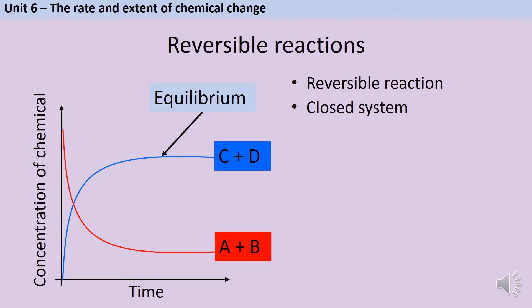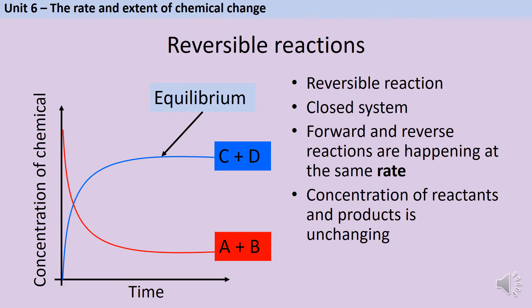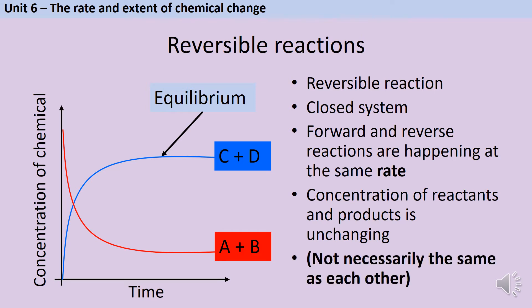When we think about equilibrium in chemistry, we're looking for the point where the forward reaction — where A and B turn into C and D — and the reverse reaction — where C and D turn into A and B — are occurring at the same rate. When that happens, we reach a point where the concentration of the reactants and the products stops changing. On the graph, the concentration of A and B decreases as they turn into C and D, and the concentration of C and D increases as they get made. Eventually, when those two reactions are happening at the same rate, the concentrations will stop changing and we say we've reached equilibrium. But that doesn't mean all the concentrations are the same as each other — it just means they have stopped changing.